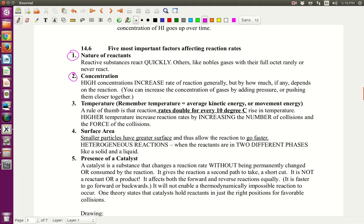We've already talked about the nature of the reactants, which is just what it is. Is it an alkali metal? Is it a noble gas? Does it have eight valence electrons or two or one? Is it trying to gain more electrons quickly or get rid of them? So just basically what is the element? That's going to affect how quickly it reacts.